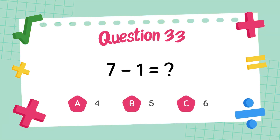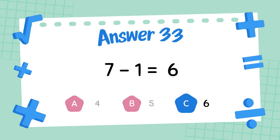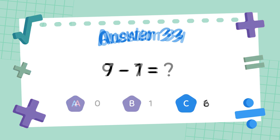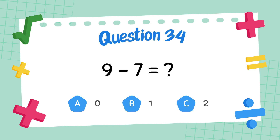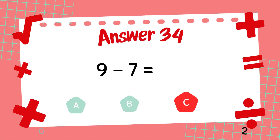What is 7 minus 1? The answer is 6. What is 9 minus 7? The answer is 2.